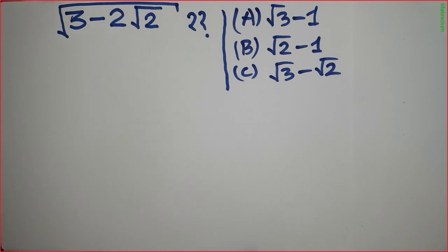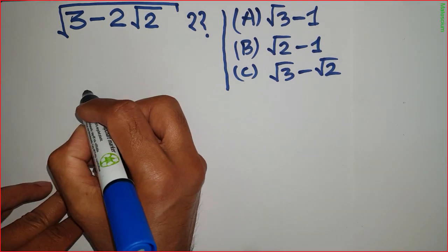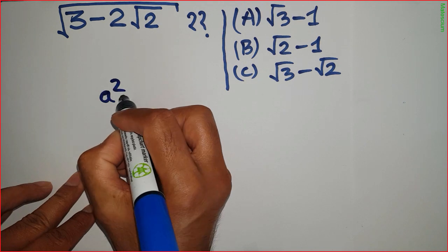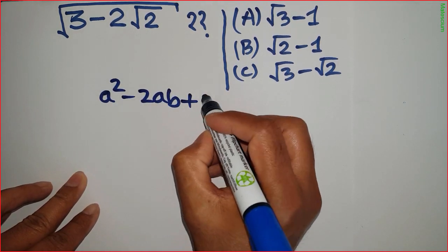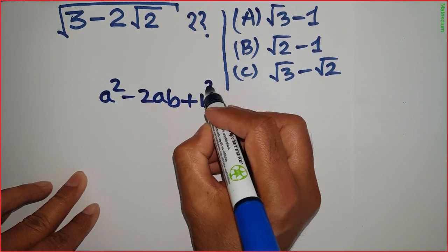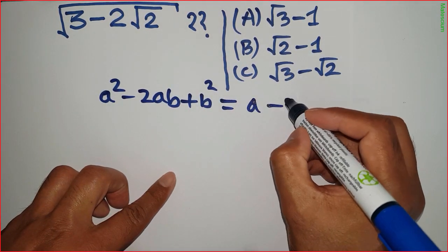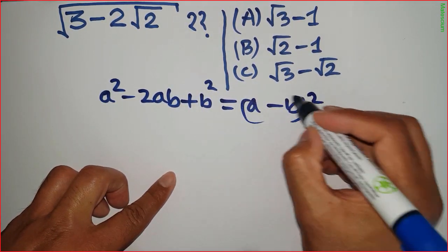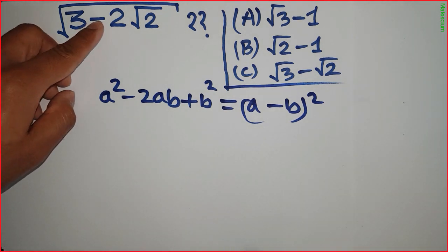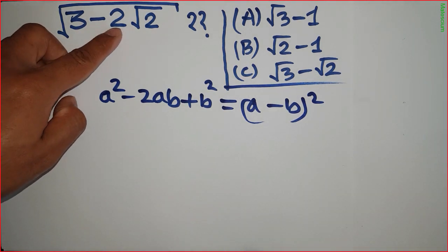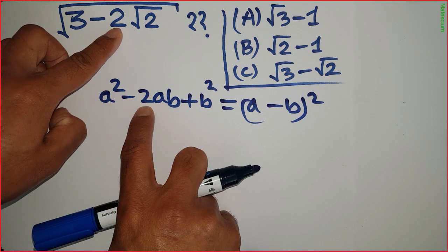To do that, let's recall a simple formula: a squared minus 2ab plus b squared, which equals (a minus b) whole squared. We know it from high school. Interestingly, this minus and this 2 in our expression resemble the formula's terms.